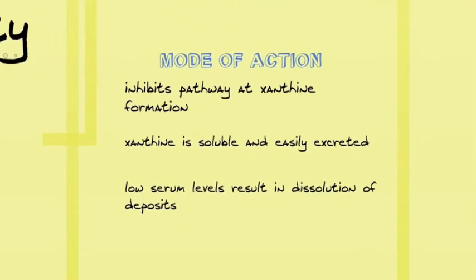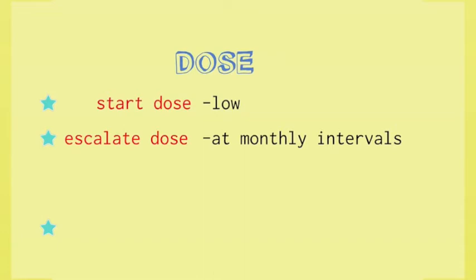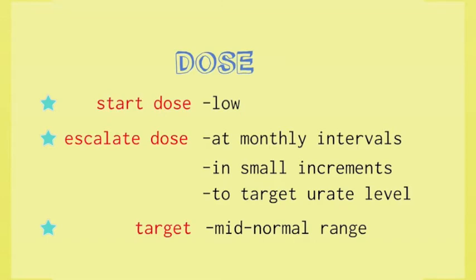Both these drugs work in the same way by inhibiting xanthine oxidase and solubilizing deposits. In both cases, one should start the dose as low as possible and then escalate the dose at intervals — monthly intervals is a useful rule of thumb — so that there is a period after each dose escalation where the new serum level stabilizes. The smaller the increment of increase, the less likely one is to provoke acute attacks. The dose is escalated to target urate levels, and the target is the mid-normal range of urate levels.